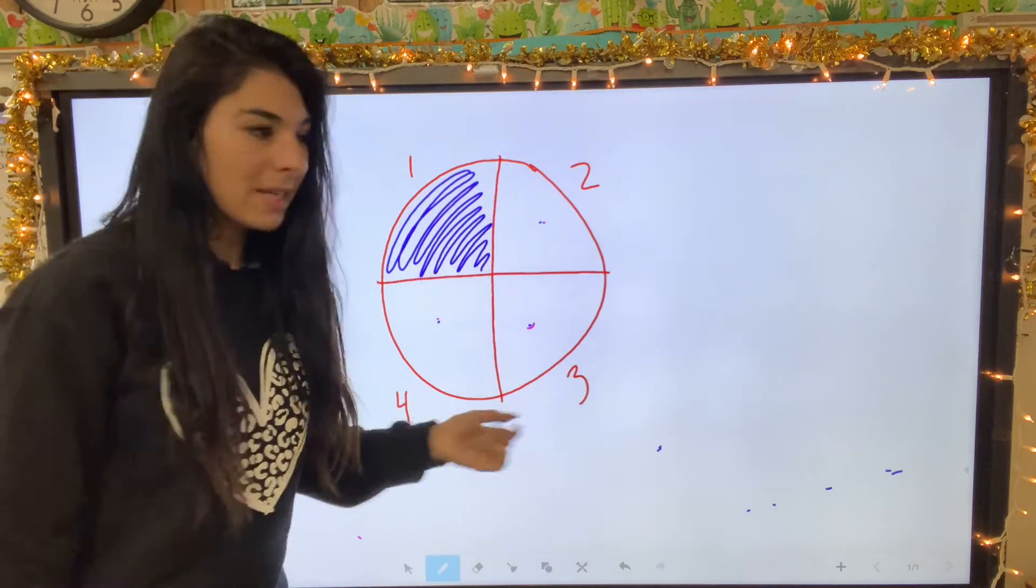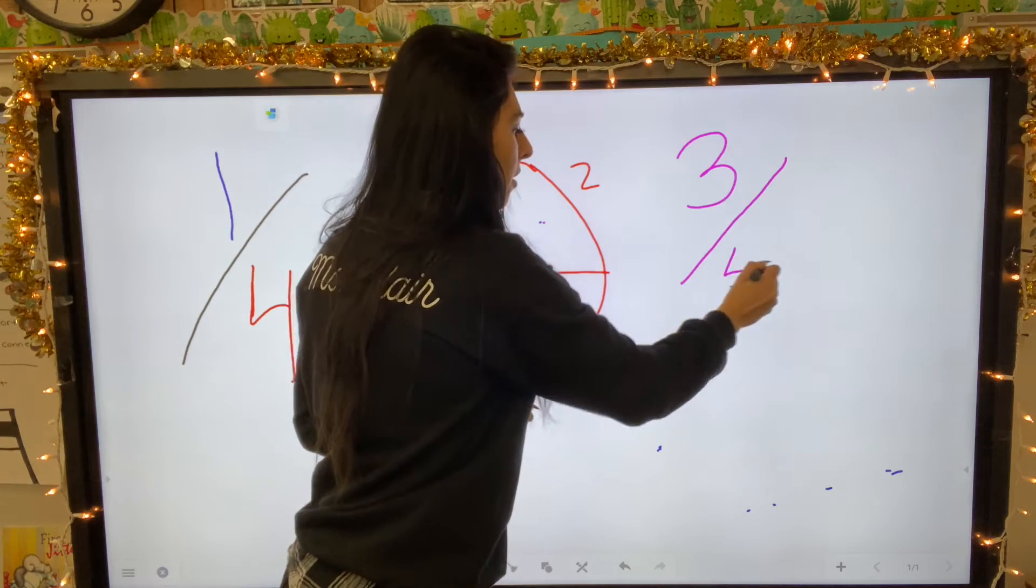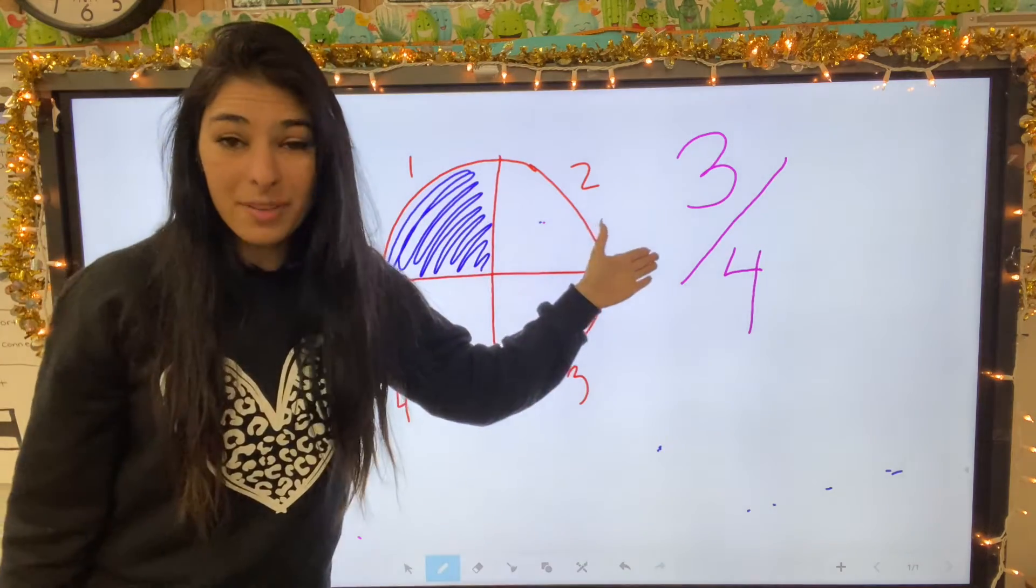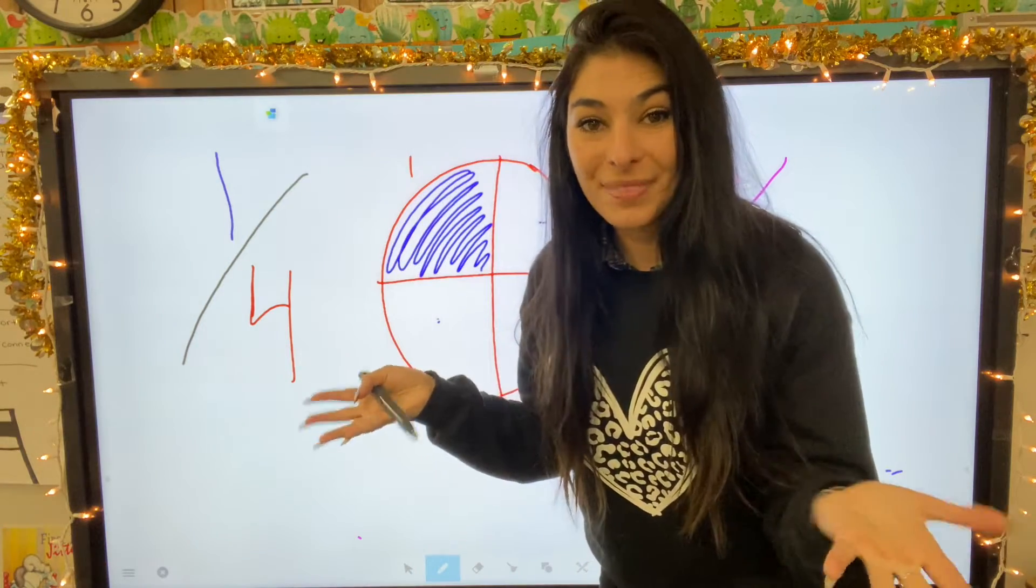So the unshaded pieces are three over four. So three fourths is not shaded. One fourth is shaded. Let's do one more.